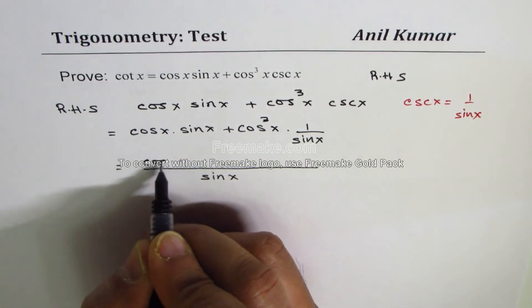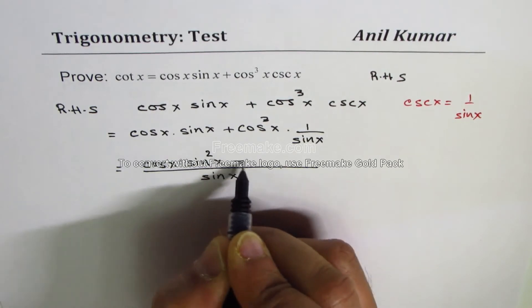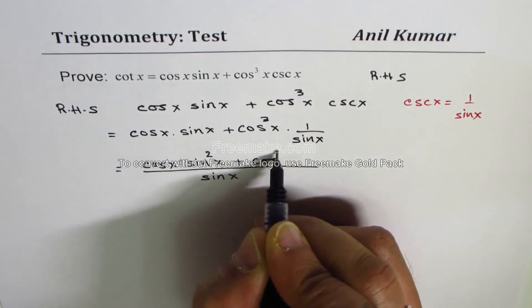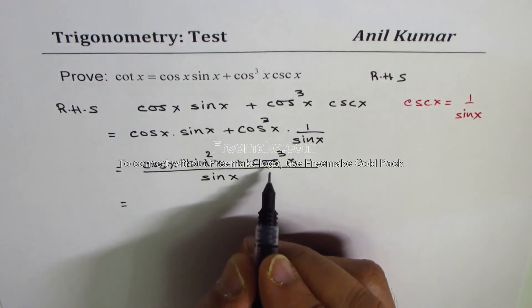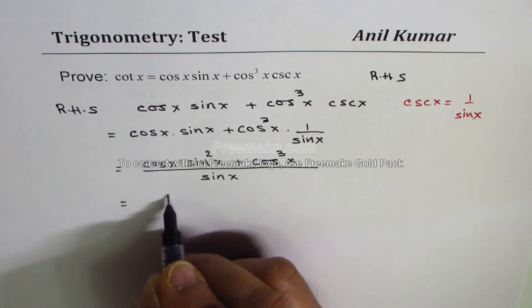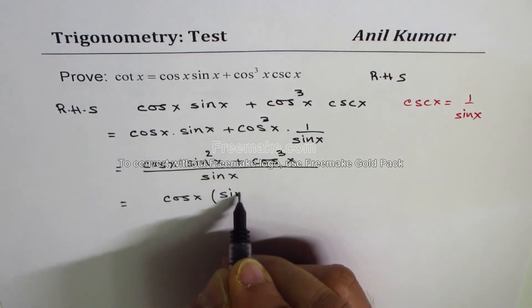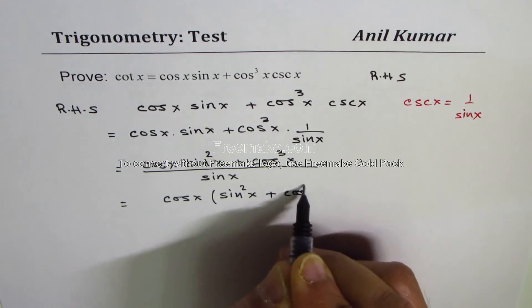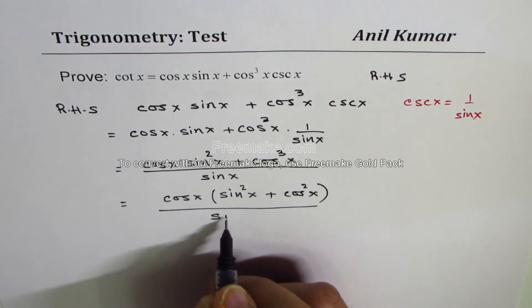Now you can clearly see that cos x is common in the numerator, so factoring it out, we're left with cos x times (sin² x plus cos² x) divided by sin x.